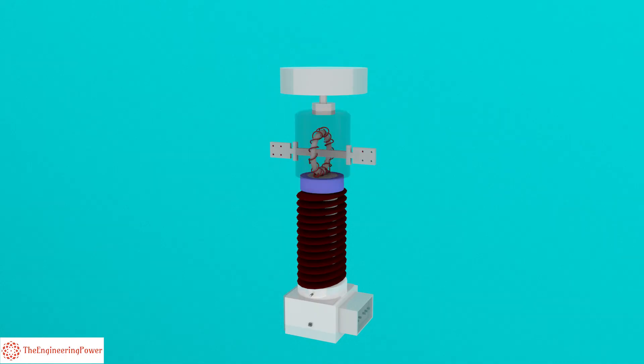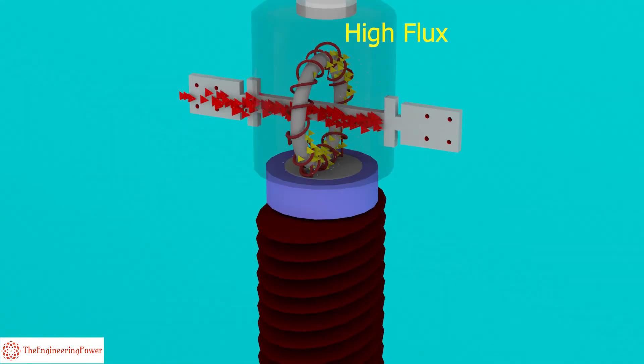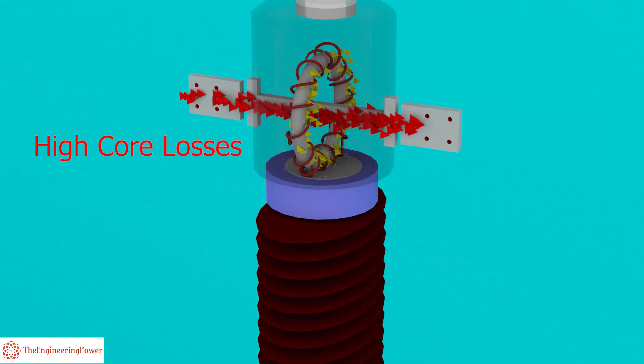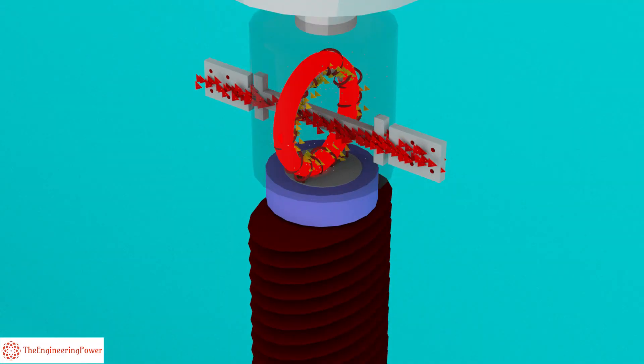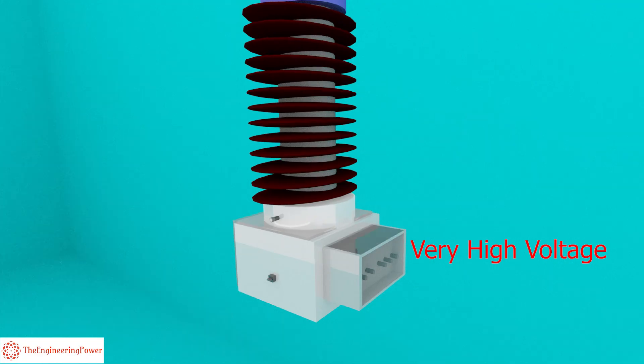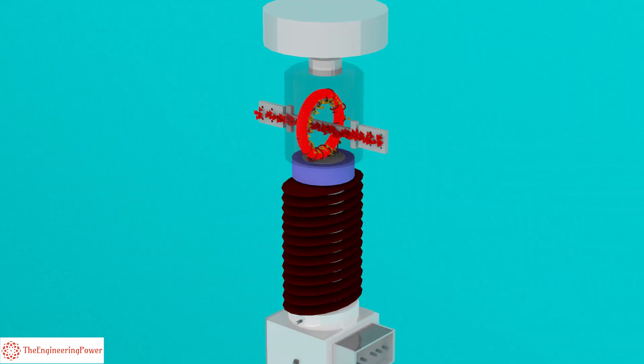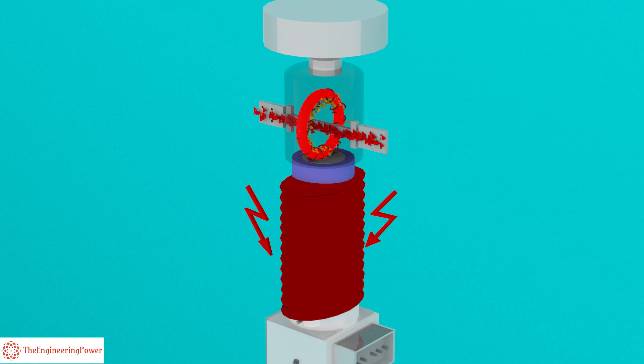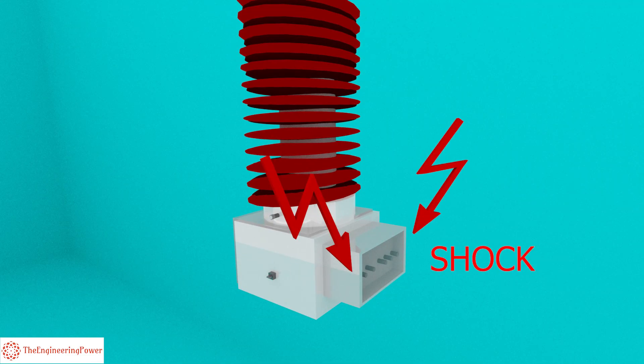If the secondary winding of the CT is left open-circuited, in such case due to the absence of counter-ampere turns of the secondary, the primary MMF will be unopposed and it will set up abnormally high flux in the core. This high flux will in turn cause high core losses and subsequently resulting in heating of the core and very high voltages will be induced in the secondary of the winding. This high voltage not only causes the breakdown of the insulation but can also result in severe shock if someone touches the secondary terminals of the CT.